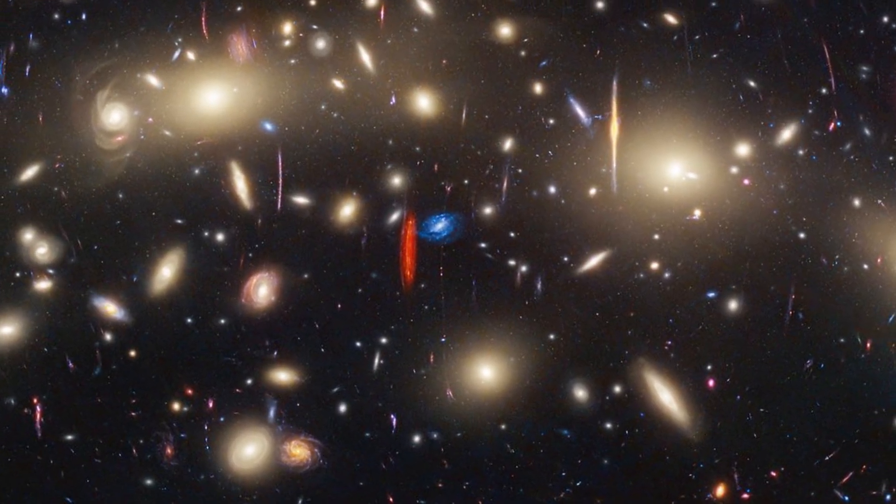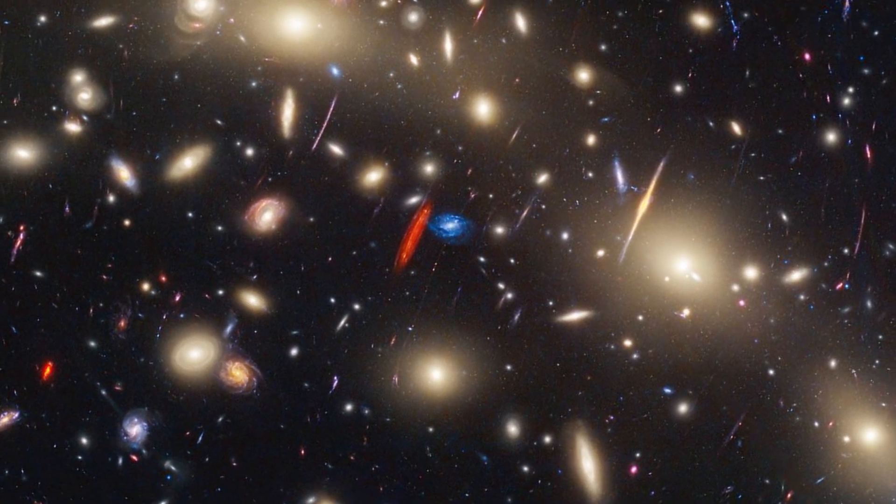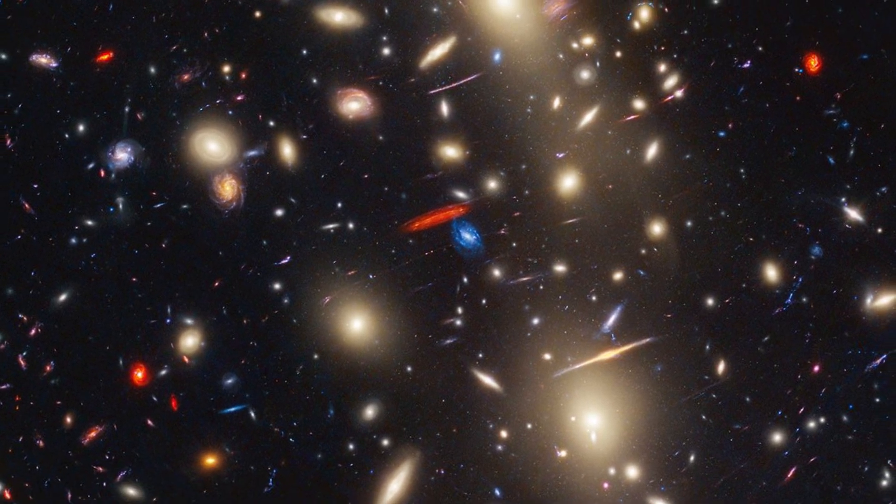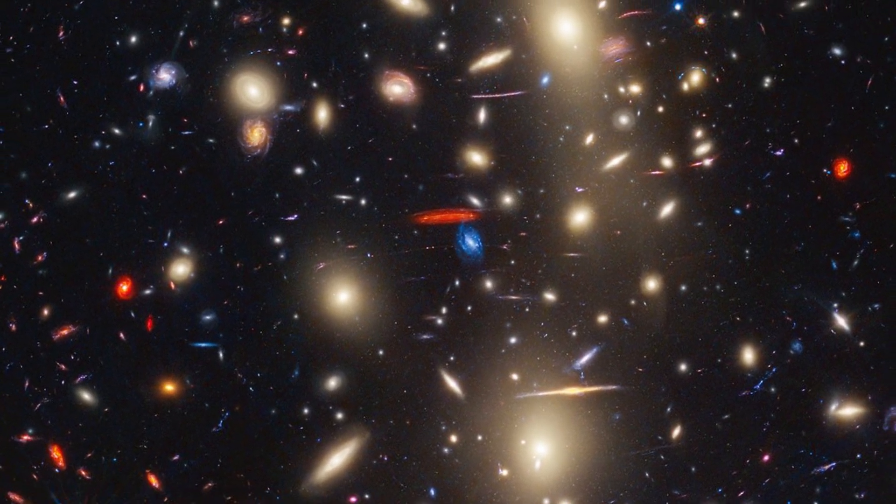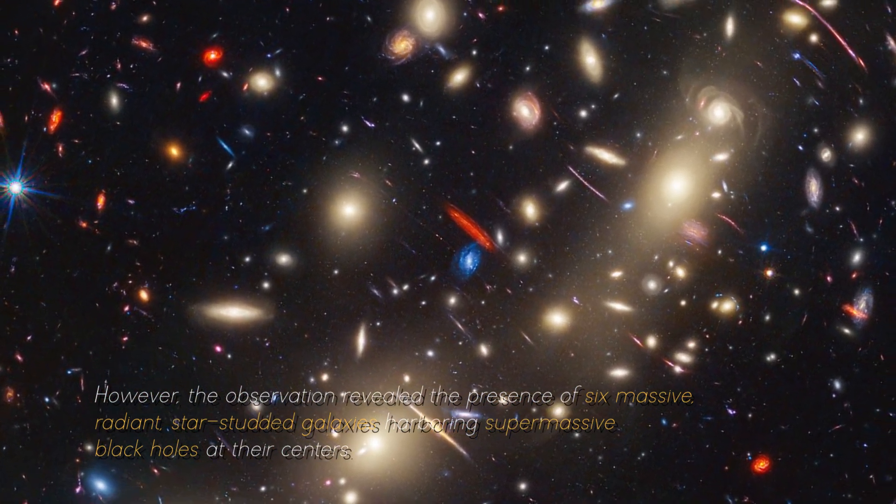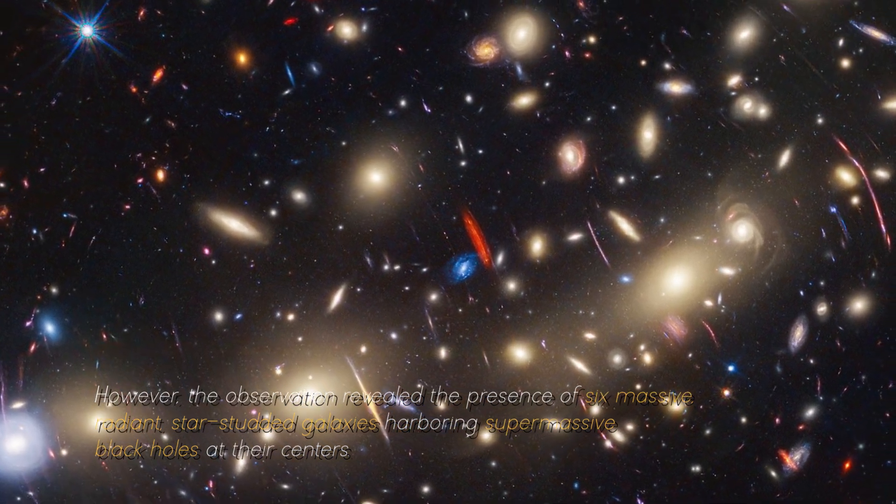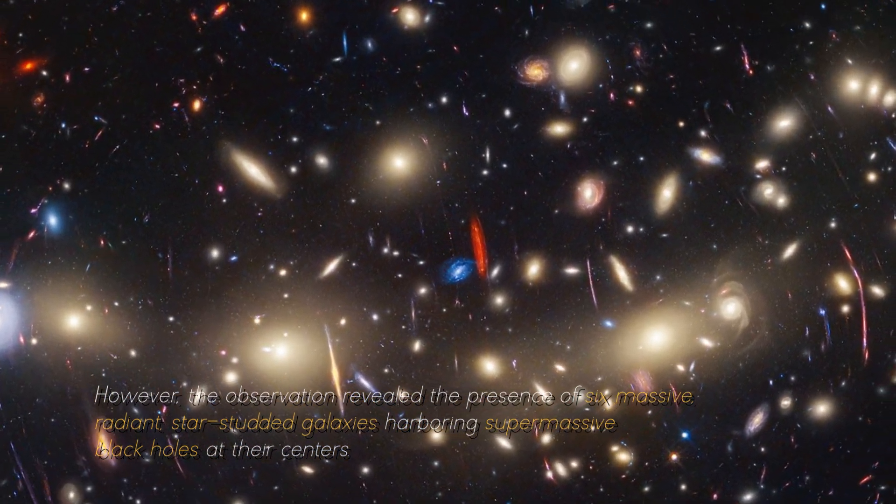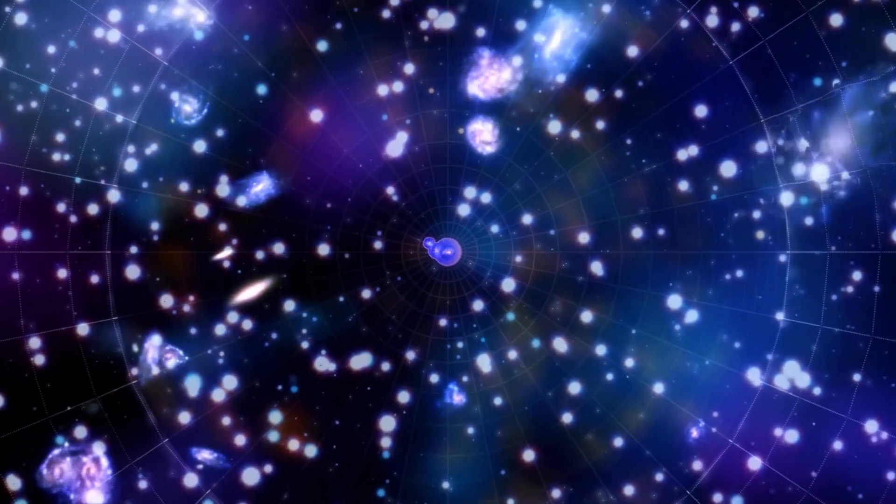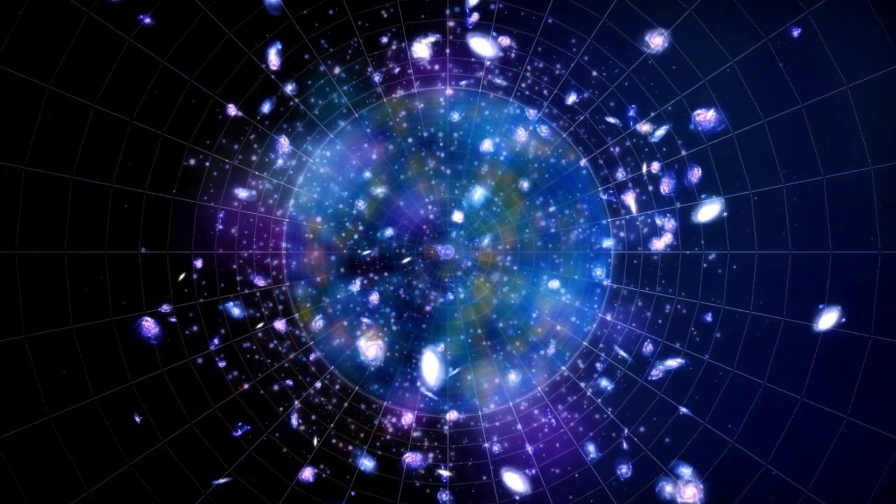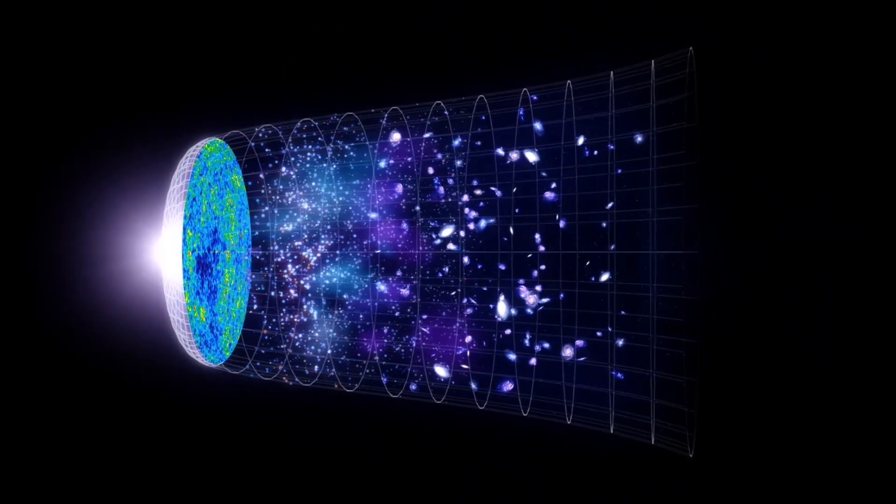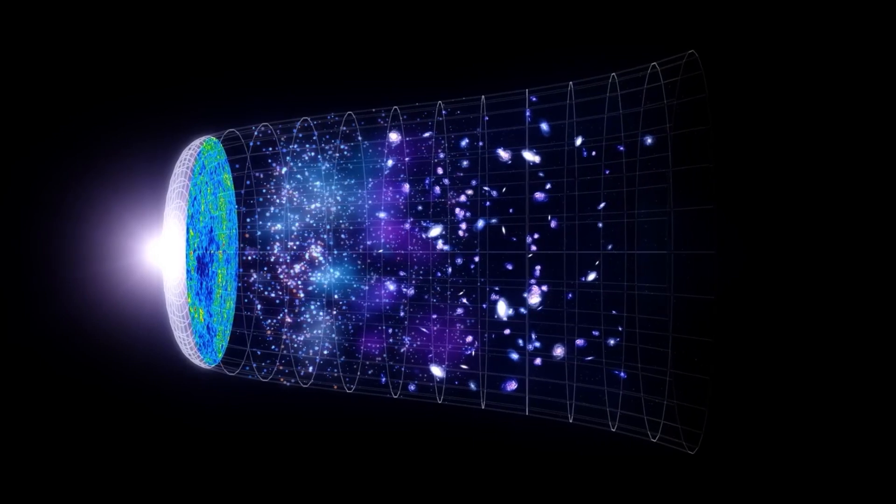This discovery challenges previous knowledge about early galaxy formation. According to the previous Big Bang theory, only prototypes of stars and stellar clusters were expected to exist in that early period. However, the observation reveals the presence of six massive, radiant, star-studded galaxies harboring supermassive black holes at their centers. These findings contradict previous expectations about the early formation of the universe, challenging the Big Bang theory and raising fundamental questions about the existence of black holes of such magnitude at such an early stage of cosmic evolution.